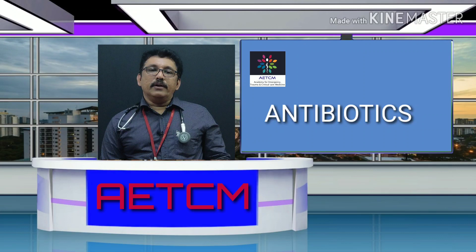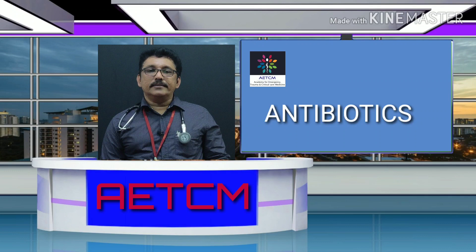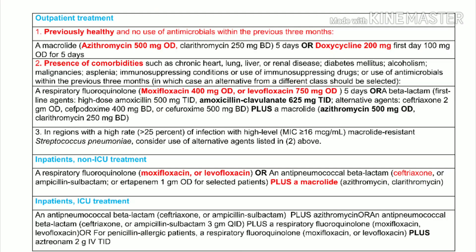Once the patient is admitted, decide on antibiotics. For community acquired pneumonia with suspected Streptococcus, give penicillin group antibiotics — penicillin injection, amoxicillin, or co-amoxiclav injection. For discharge, use oral amoxicillin or co-amoxiclav. If the patient has pre-existing lung disease like COPD or ILD, provide broader gram-negative coverage: Moxifloxacin 400 mg OD or Levofloxacin 750 mg OD. For ICU patients, use Piperacillin-tazobactam or Meropenem. For suspected atypical bacteria, use macrolides like Azithromycin 500 mg once daily for 3-5 days.